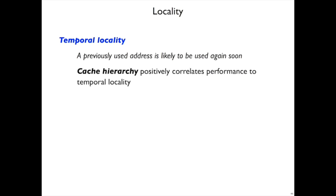The cache hierarchy makes sure that there's a positive correlation in performance to the temporal locality. The more recently you just used it, the quicker a value is available.